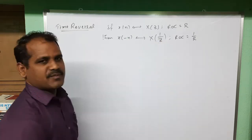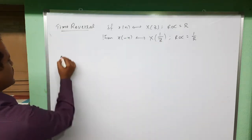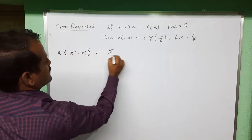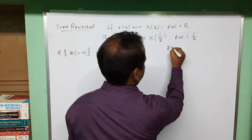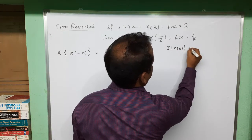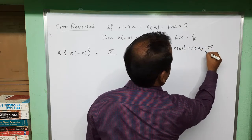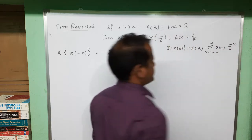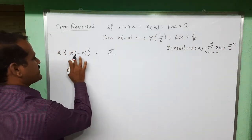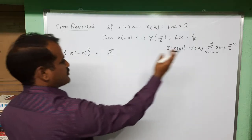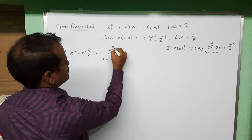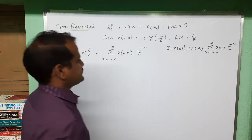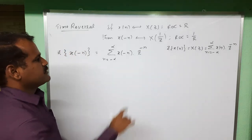Let us consider the Z-transform of X(-n). From the standard Z-transform formula, Z-transform of X(n) is X(Z), that is the summation from n = -∞ to +∞ of X(n) Z^(-n). Here in place of X(n) we have X(-n), so we write the summation from n = -∞ to +∞ of X(-n) Z^(-n).